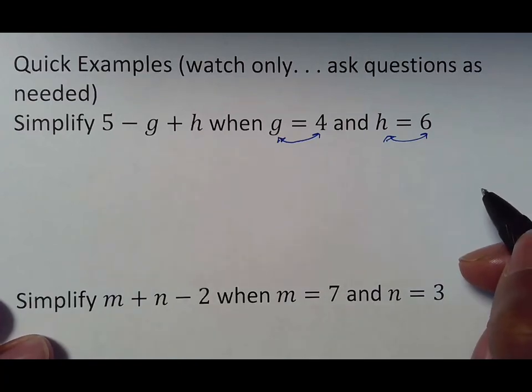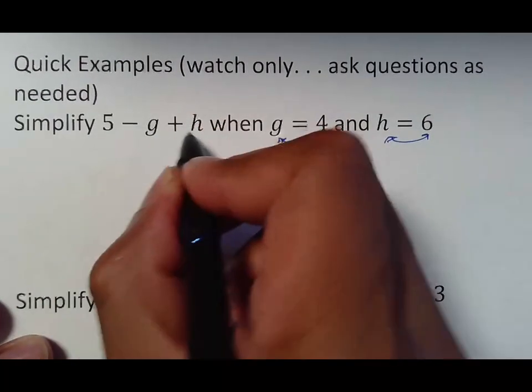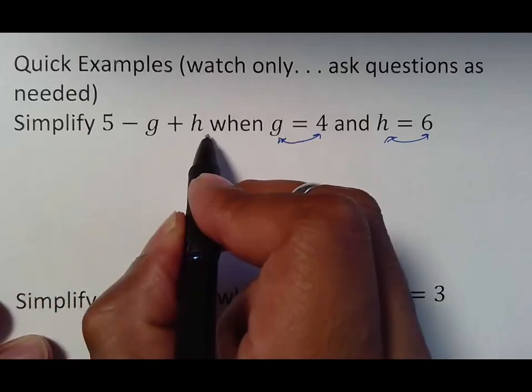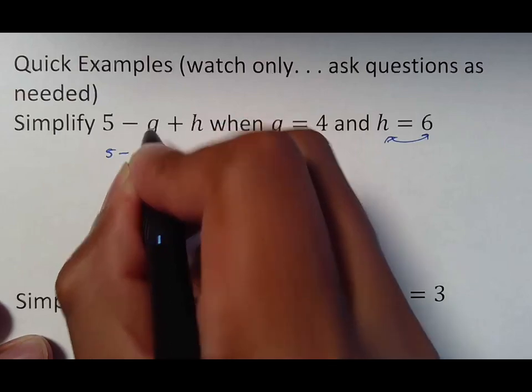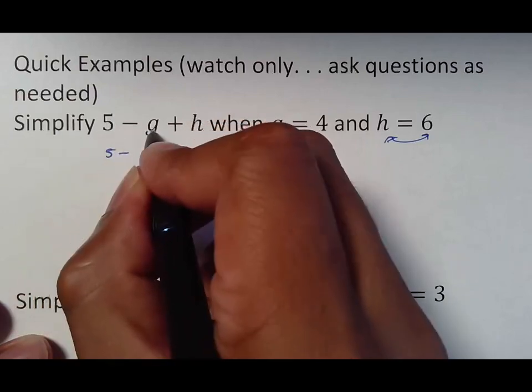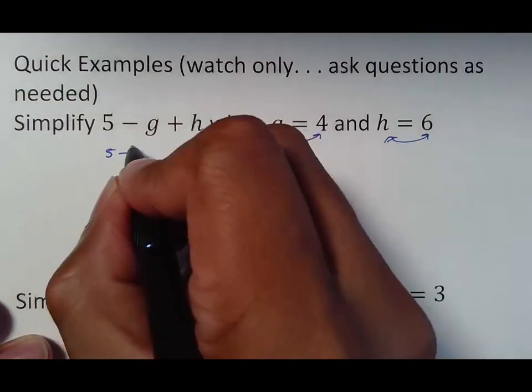So what I'm going to do first, which is what you need to do, is rewrite this equation, because we can't do anything with letters in it, we need these to be numbers. So what we're going to do is rewrite it up to the g, because everything here matters. The g, though, is going to be traded for a four. And so what I'm going to do is put parentheses four. After g is a plus, h can be traded with a six. So I'm going to put parentheses six.